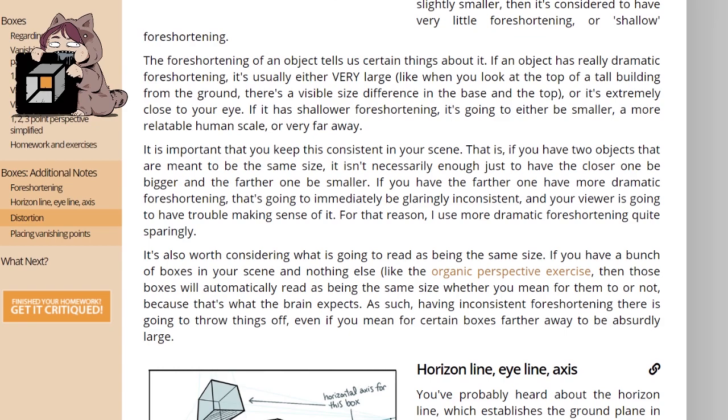It's also worth considering what is going to read as being the same size. If you have a bunch of boxes in your scene and nothing else, like the organic perspective exercise, then those boxes will automatically read as being the same size whether you mean for them to or not. That's because that's what your brain expects. As such, having inconsistent foreshortening there is going to throw things off, even if you mean for certain boxes farther away to be absurdly large.